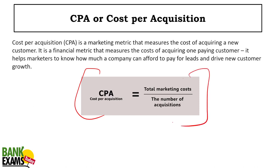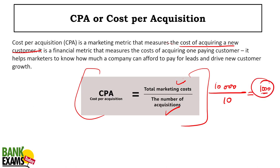CPA, or Cost Per Acquisition: the formula is total marketing cost divided by number of acquisitions. It's a financial metric that measures the cost of acquiring a new customer. For example, if your total marketing cost is 10,000 rupees and you acquire 10 new customers, then your CPA is 1,000 rupees. Please remember this formula — it is very important.